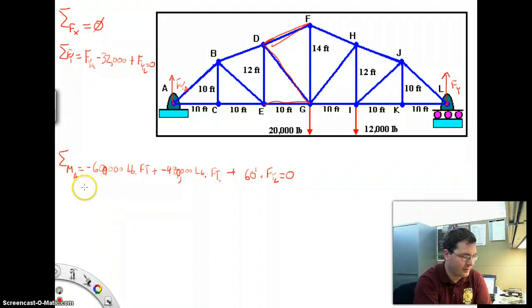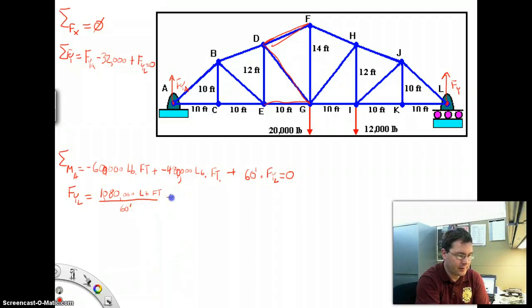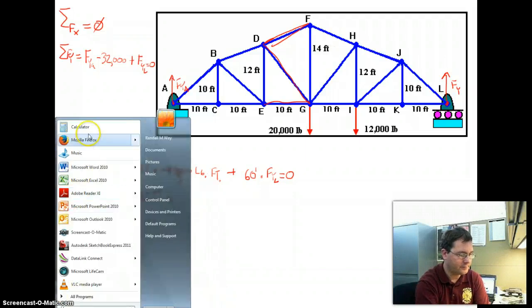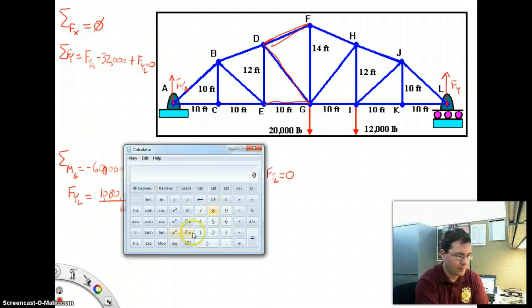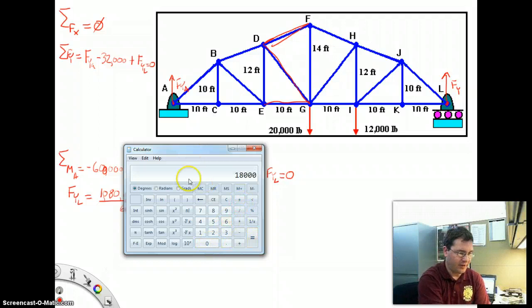So if I push this all around, using a few dazzling algebraic contortions, I get force in the Y direction at point L is equal to - I'm going to add these two to the right side. So they've added together their 1,080,000 pound feet. And this is going to equal the force in the Y direction. 1,080,000 divided by 60. That's 18,000 pounds.